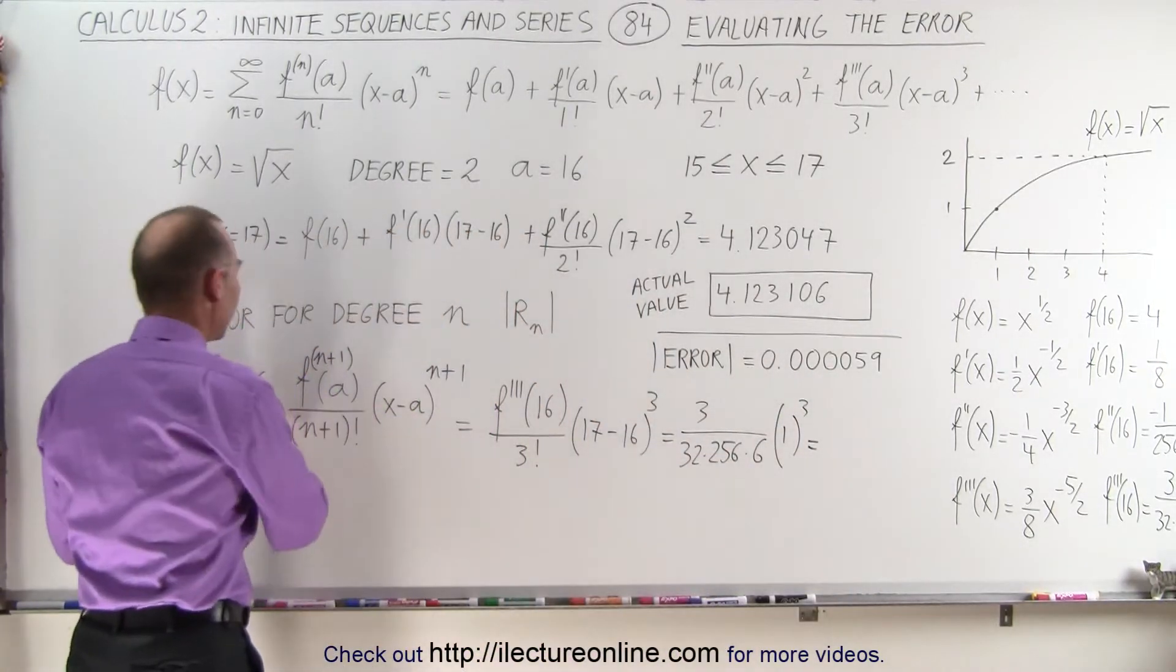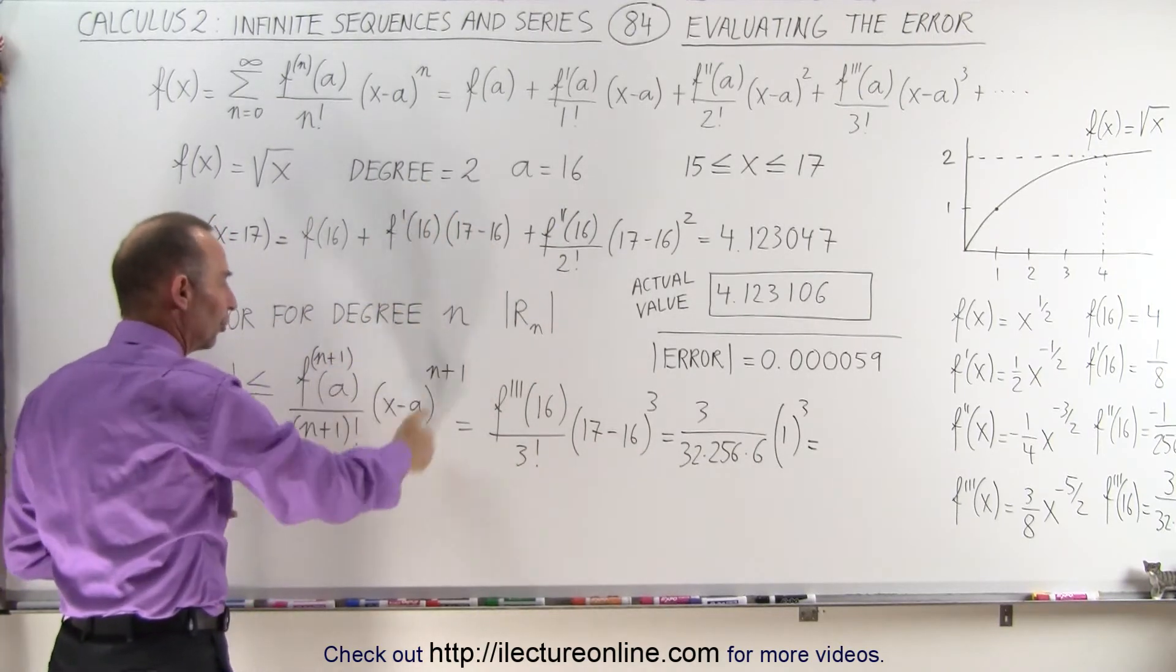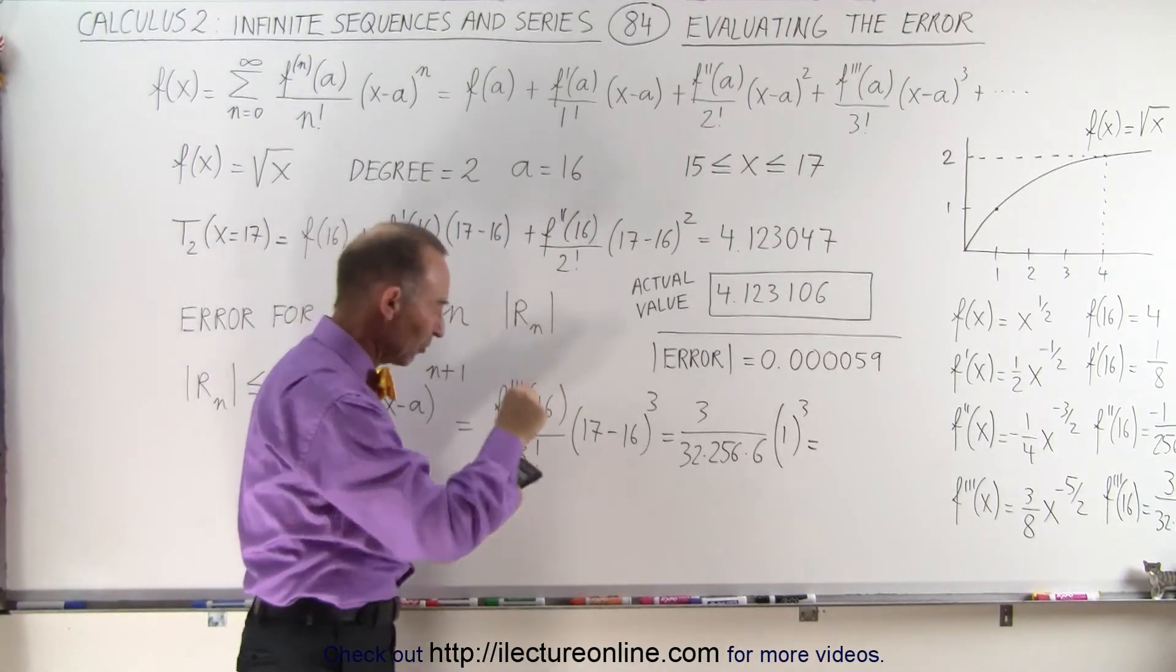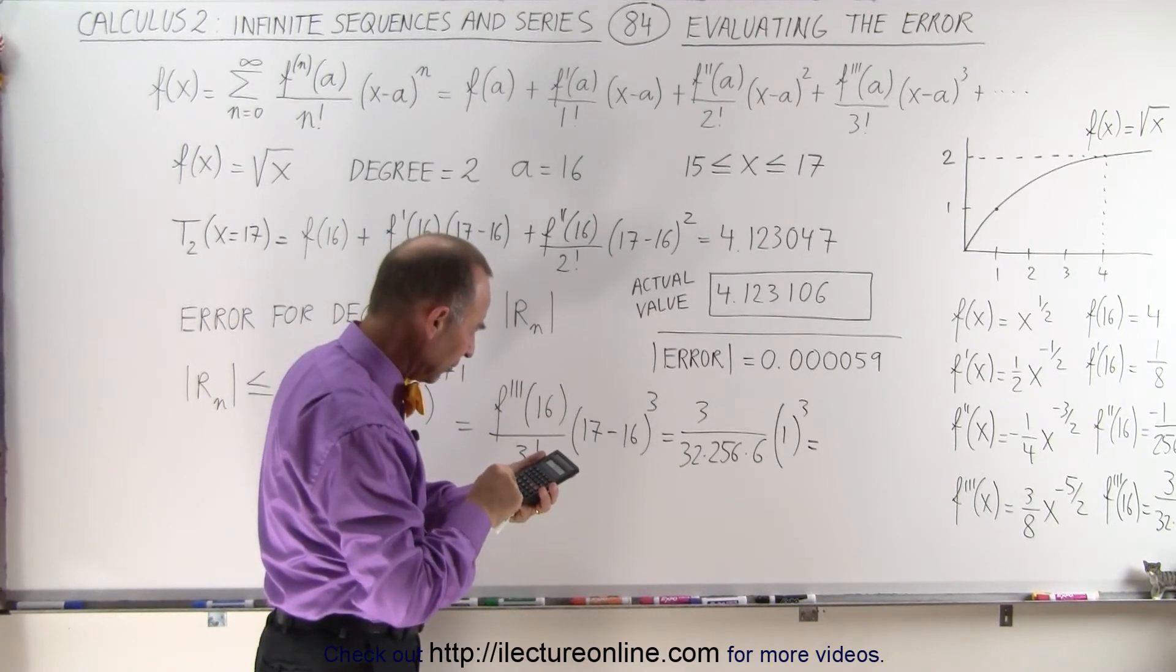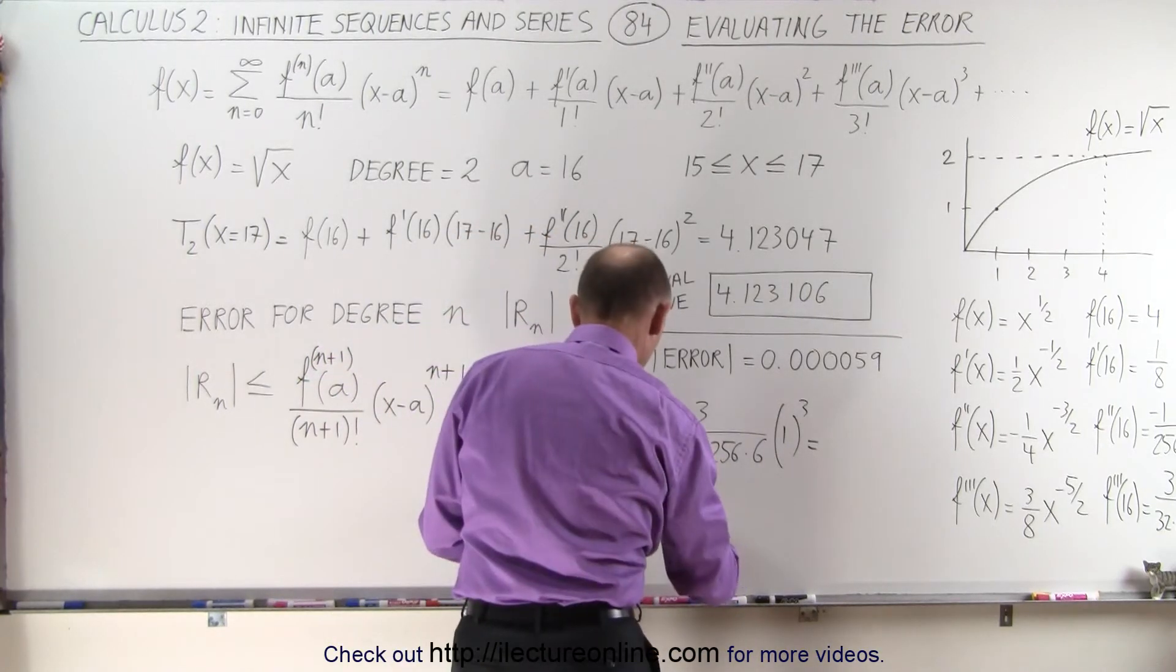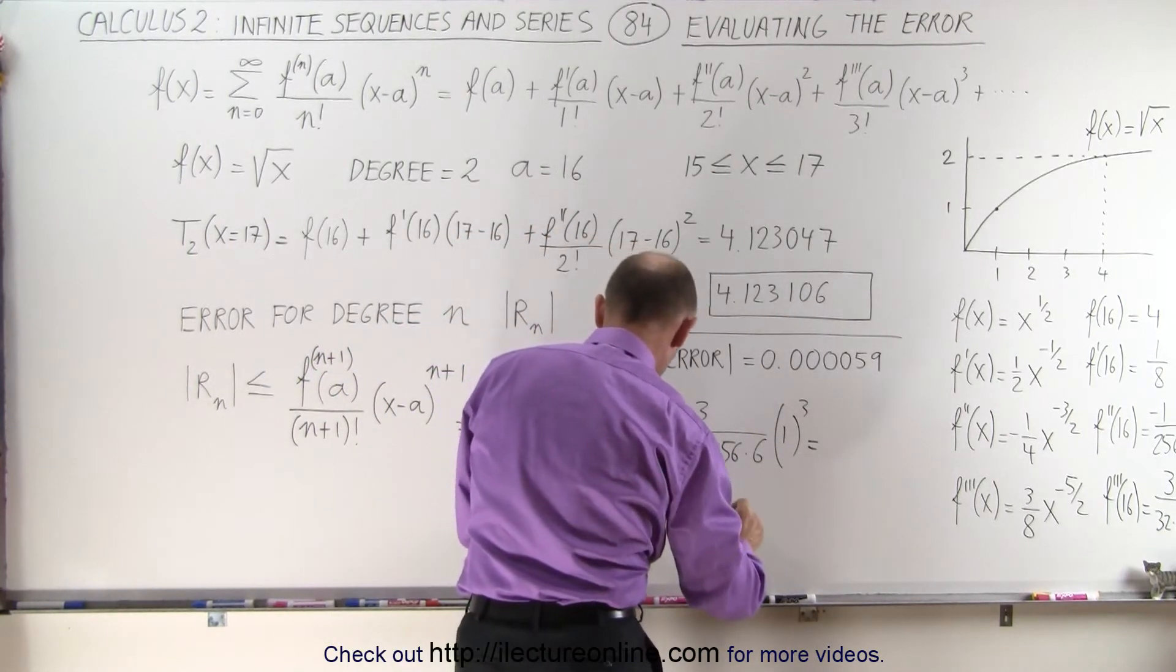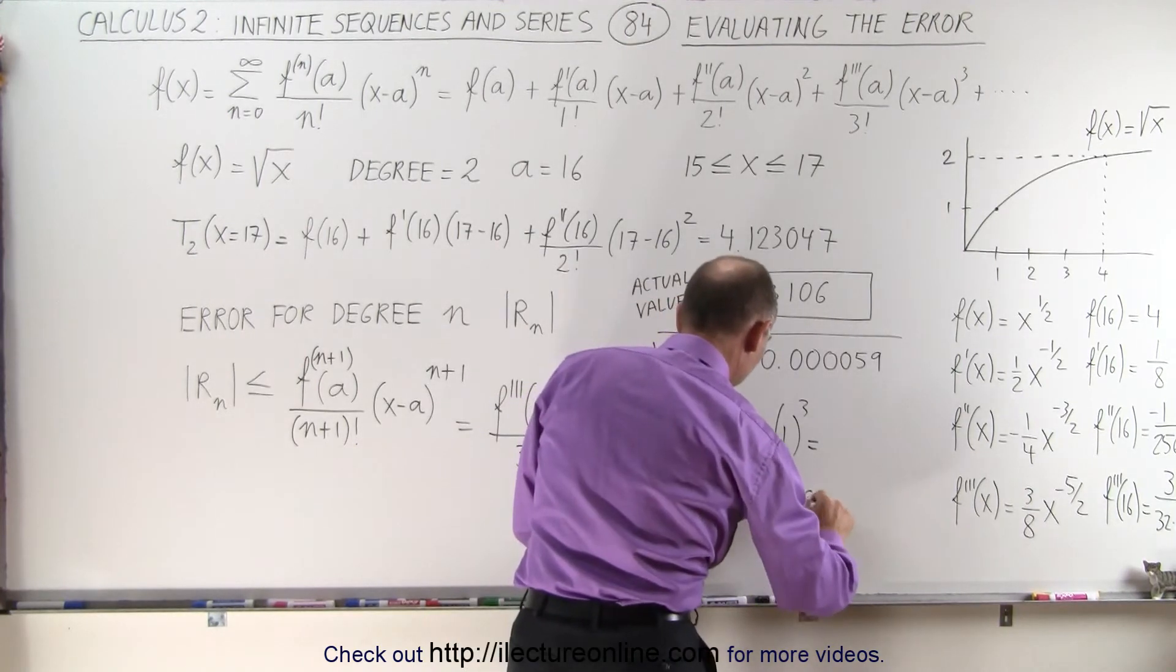At least, we know that our error in our estimation for degree 2 will be less than the next term in the Taylor series expansion. So we have 3 divided by 32, divided by 256, divided by 6 equals, and we end up with this is equal to 0.000061.